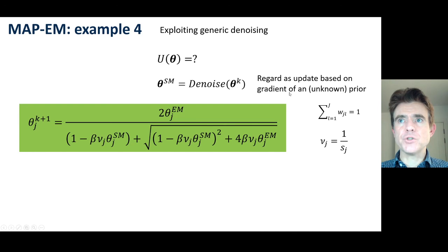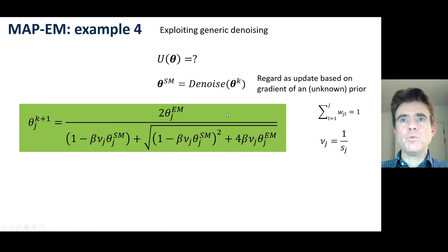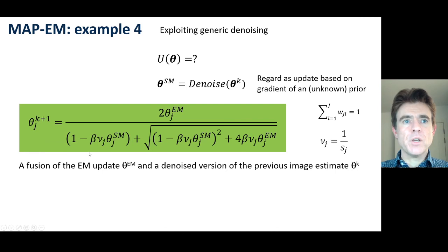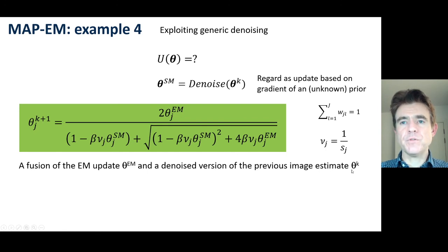We regard this as a gradient-based update according to some unknown prior energy function, and plug it in similarly to the other MAP-EM examples. We have a smoothed update theta_sm in combination with the EM update image — it's a fusion of the EM update with a denoised version of the current image estimate theta_k.